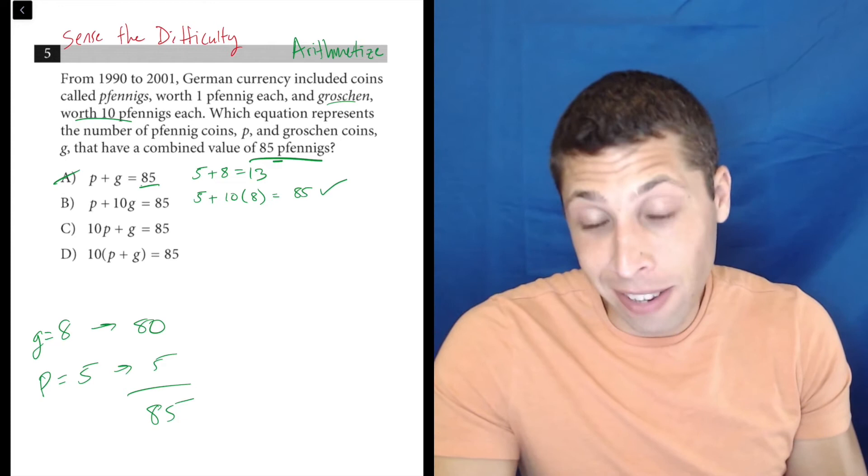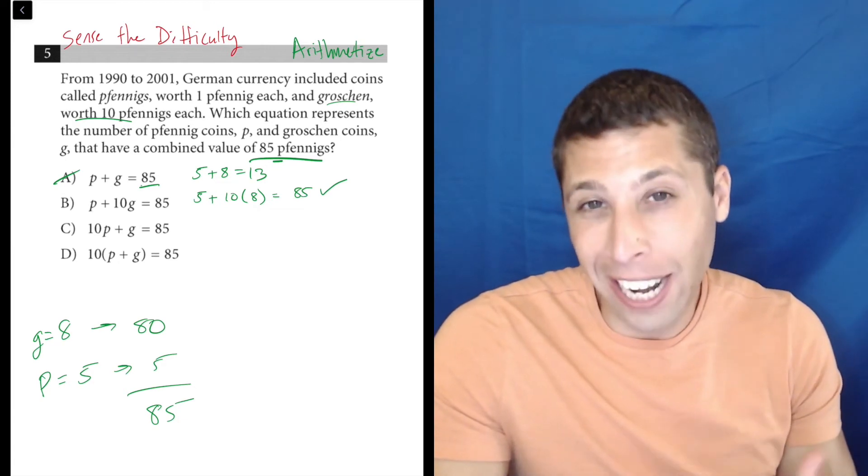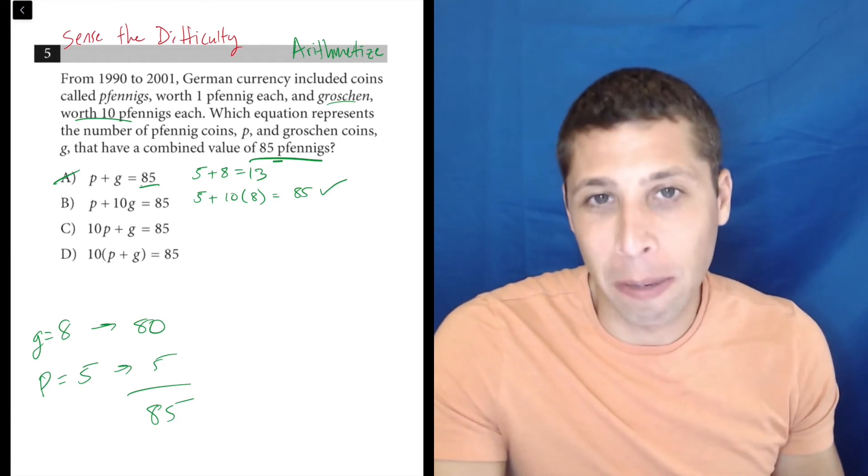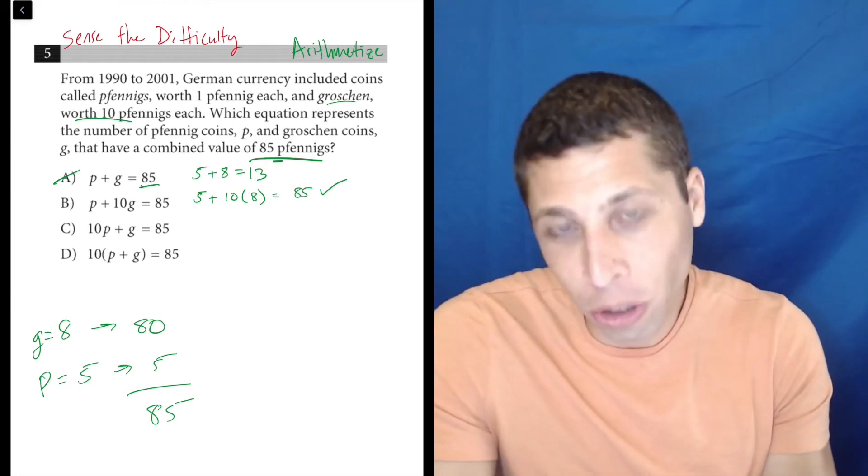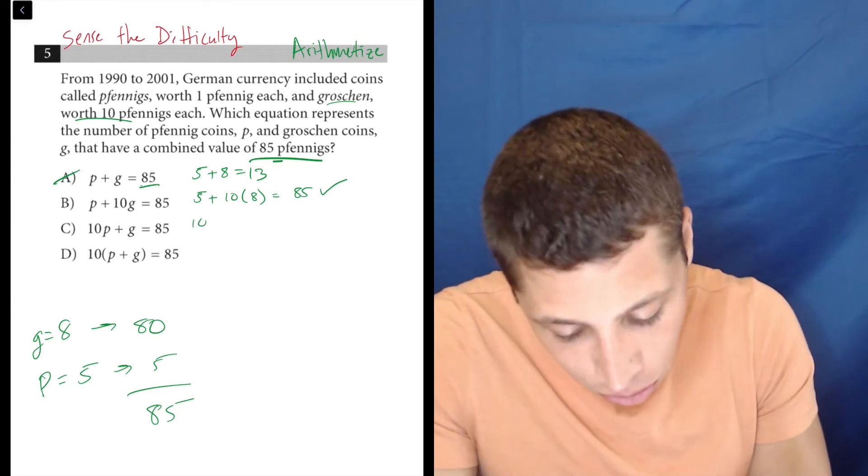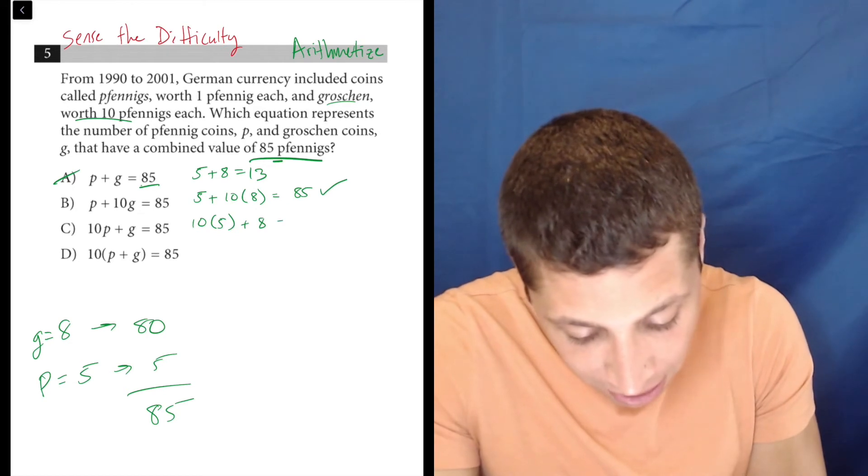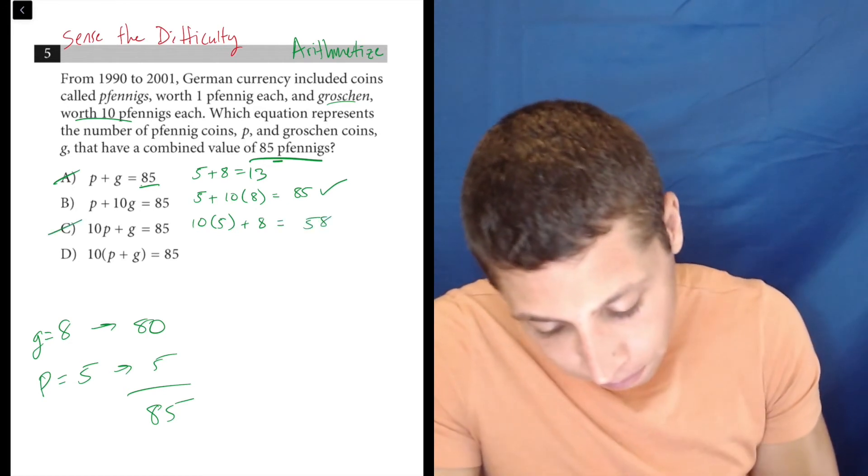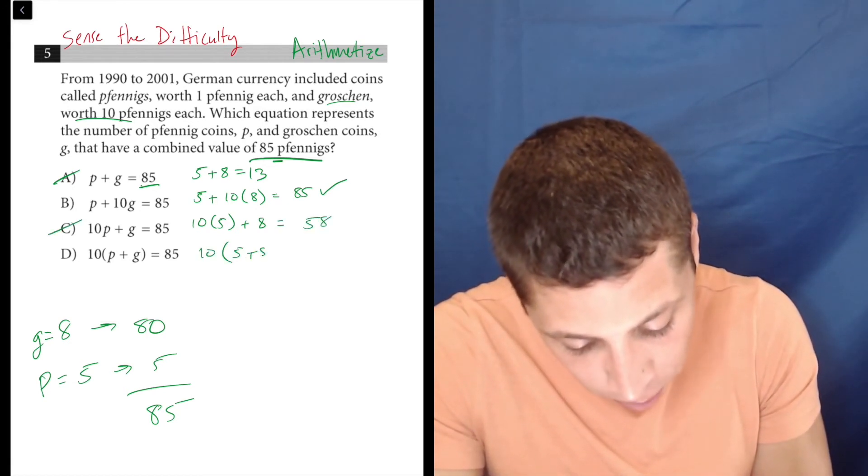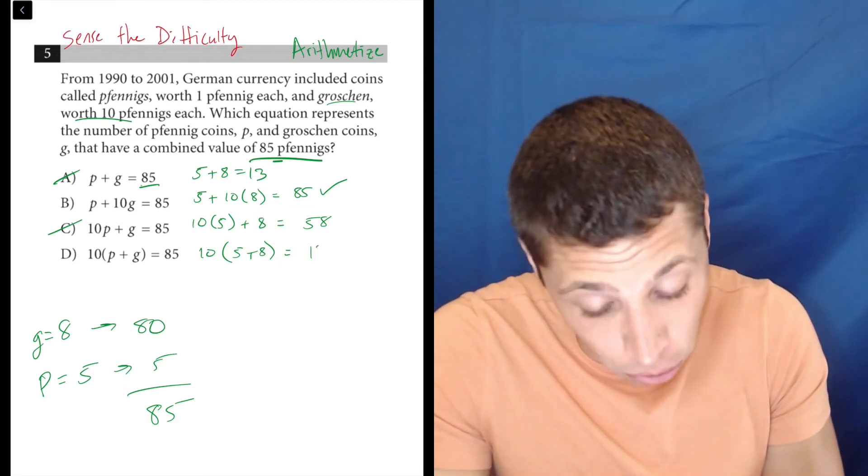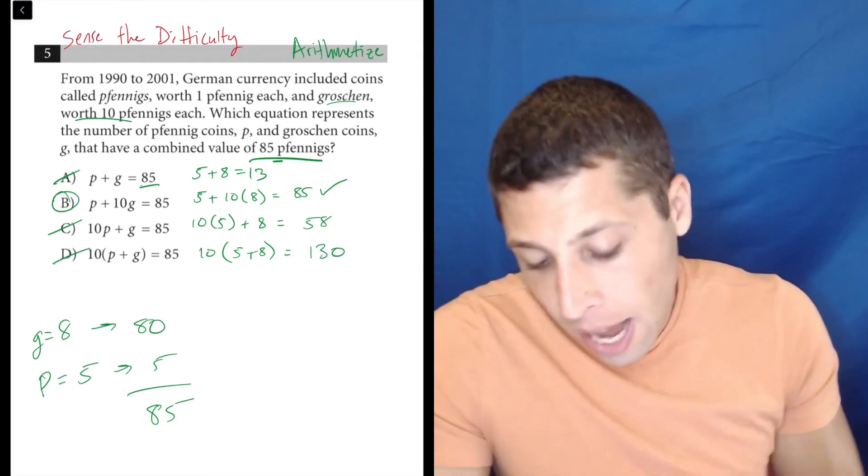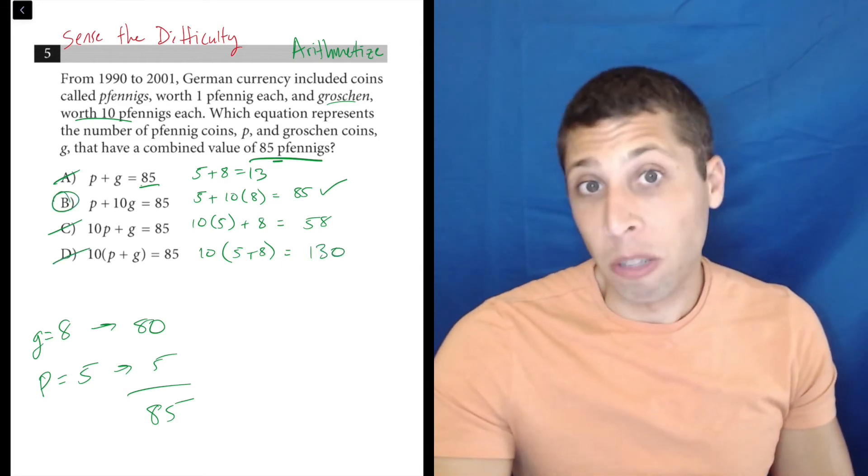Maybe I'm looking at it now in hindsight and being like, oh yeah, that's kind of what I was thinking before and now I have proof. But we should still try C and D just to be safe. So 10 times 5 plus 8, well that's 58, that's no good. And then 10 times 5 plus 8, well that's 10 times 13, which is 130. And so now I have my proof that choice B is right.